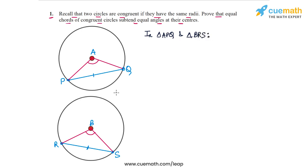What are the corresponding parts which are equal? So PQ is equal to RS, that's given to us. PQ is equal to RS, that is given.